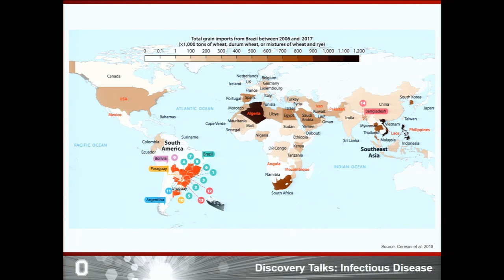The countries with confirmed wheat blast are highlighted in red. You can see it first spread through neighboring countries in South America, and in 2016 it made its way to Bangladesh, causing terrible yield loss. Different shades of brown on the map indicate grain imports from Brazil, with darker shades indicating greater import — meaning many countries are at risk of introducing the disease.